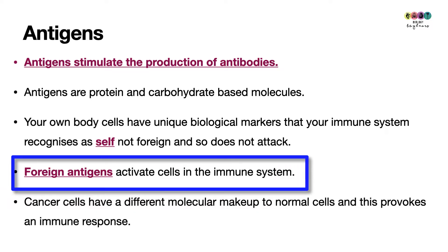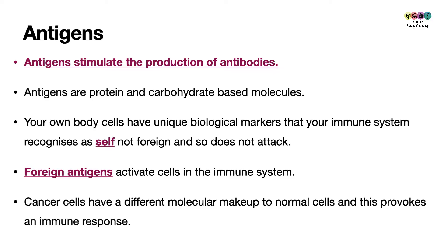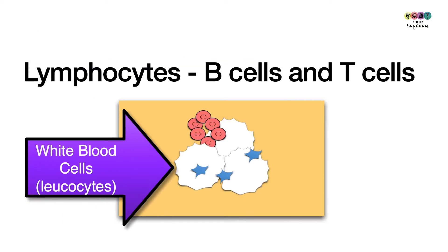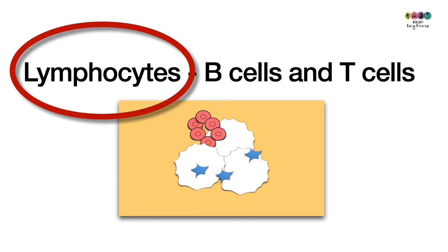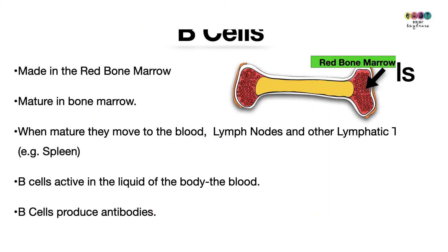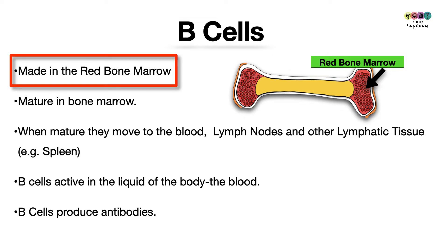It's foreign antigens that activate cells in the immune system and elicit an immune response. Cancer cells also have a different molecular makeup, and these too provoke an immune response. We previously learned that white blood cells are essential to fighting disease or infection, and in particular in this case it's the lymphocytes — the B cells and T cells — which are types of white blood cells.